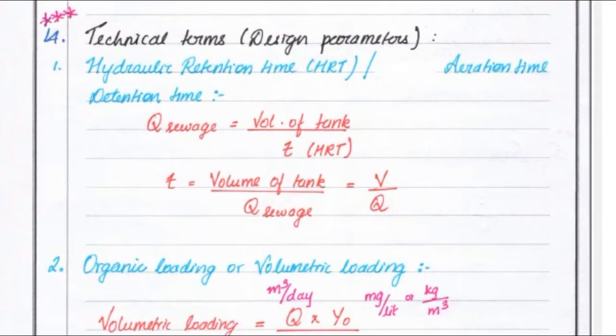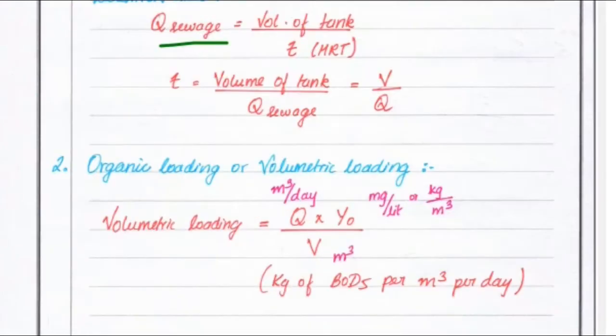First, we have to find out the hydraulic retention time, that is HRT, also called aeration time or retention time. The formula is: Q sewage equal to volume of tank divided by T. So T, that is HRT, is equal to volume of tank divided by quantity of sewage — that is V divided by Q.